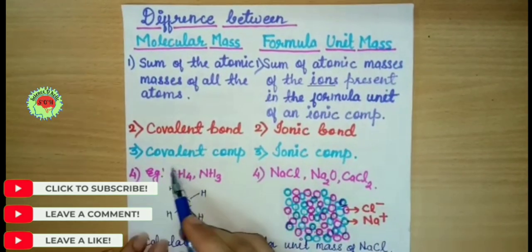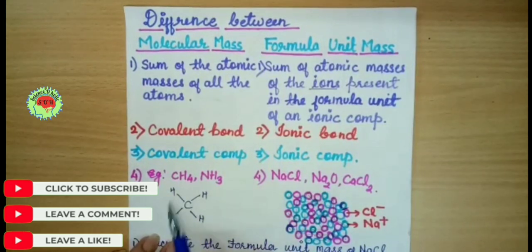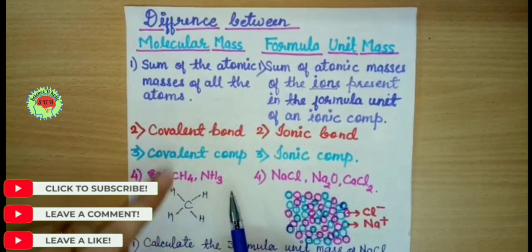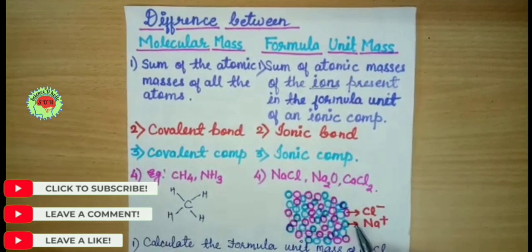Now second difference. Any molecule, suppose this is the methane molecule, has carbon and four hydrogens, and these four hydrogens are attached with the carbon with the help of covalent bonds. But in an ionic compound, you won't see one NaCl molecule.